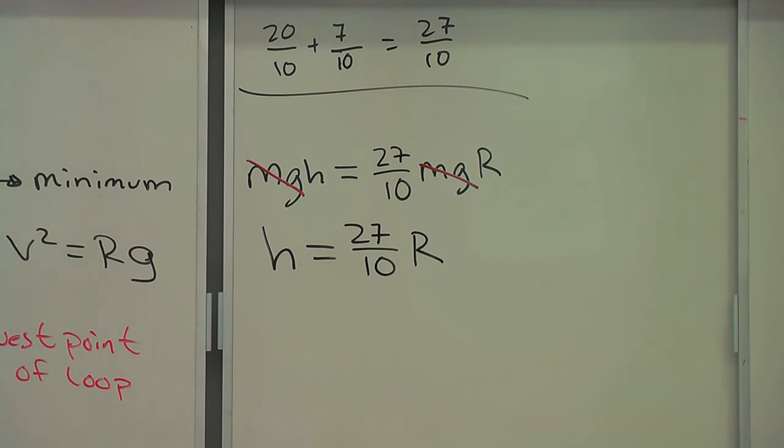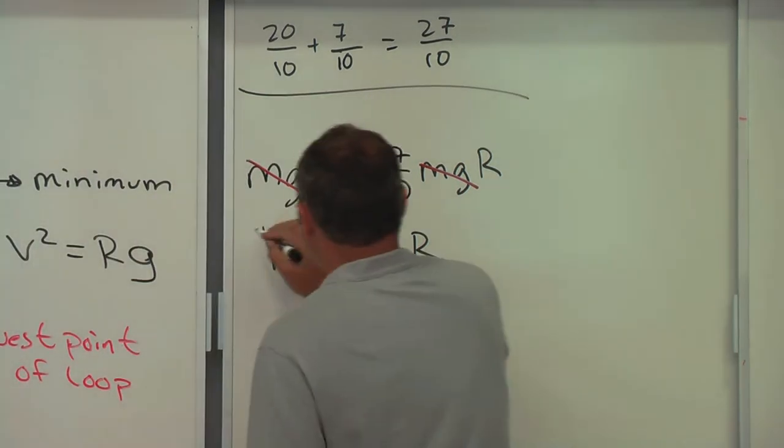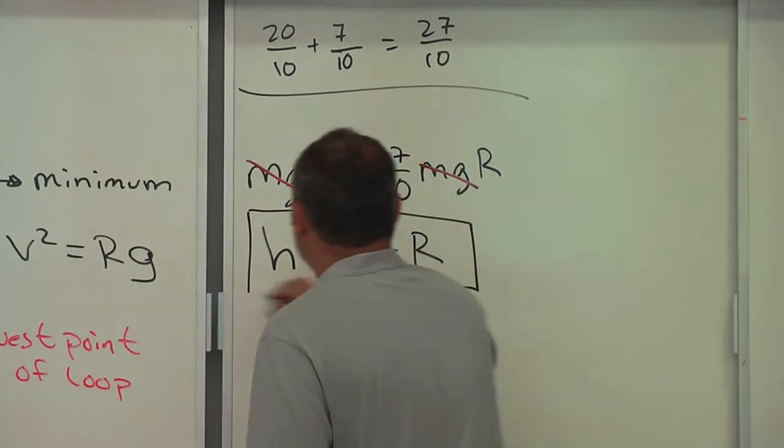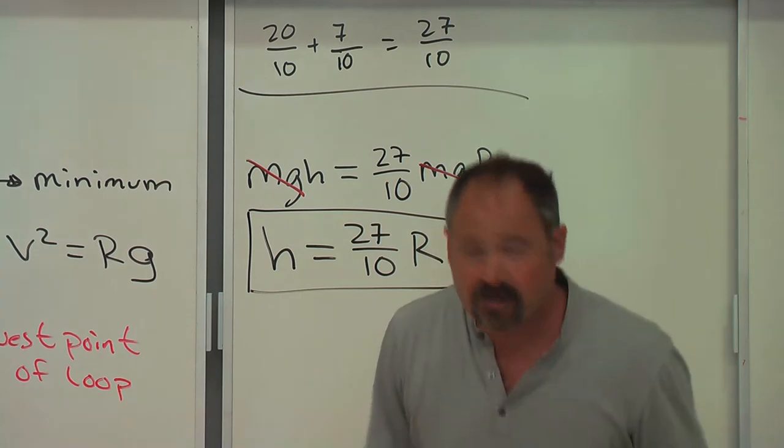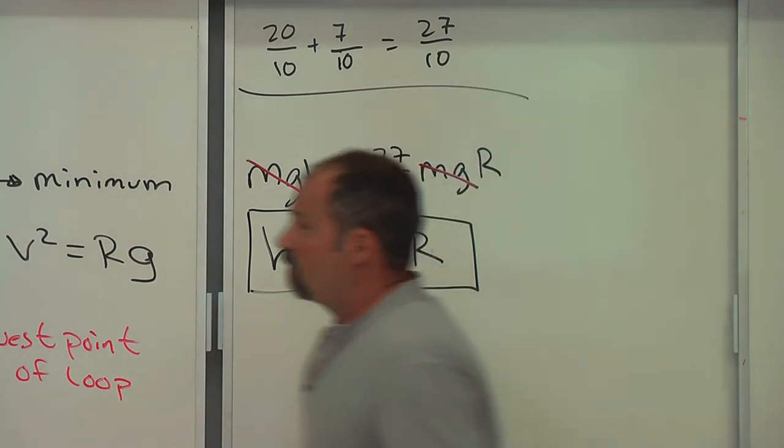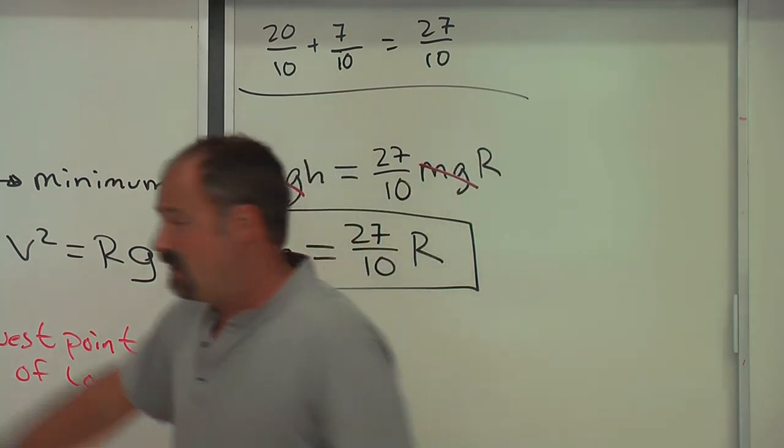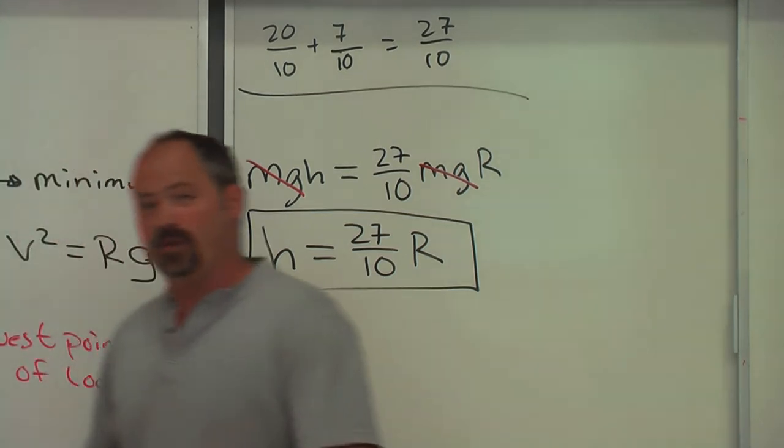And again, since I plugged in ⅖mr², we're talking about a solid ball here. A hollow ball would be ⅔mr², because it has a different moment of inertia. So, here's our answer for a solid ball starting at some height h. In order to just barely make the loop, you need to start it at 27/10 times the radius of the loop.